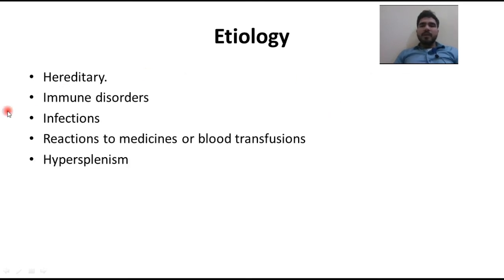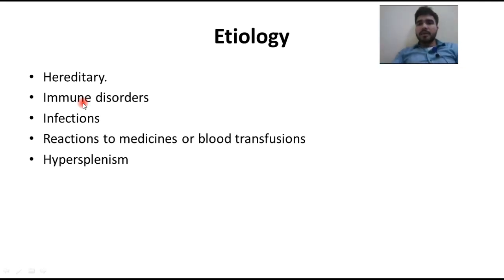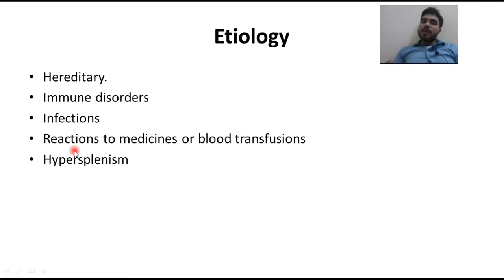The causes of hemolytic anemia include hereditary conditions, which means premature destruction of RBCs due to genetic factors. Other causes include bone marrow disorders, reactions to medicines, or blood transfusion mismatch — for example, if your blood group does not match during transfusion, it can cause hyperactive immune response.